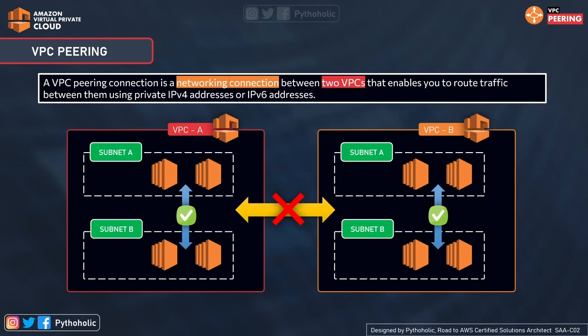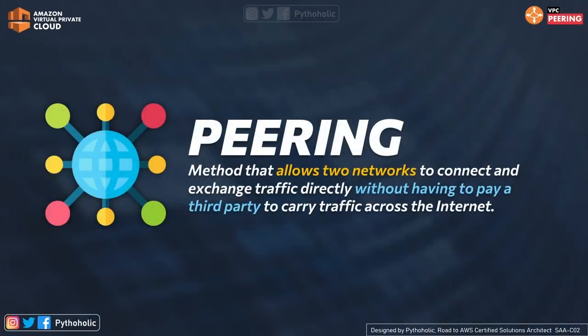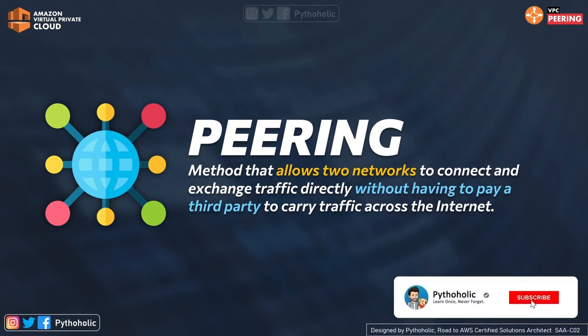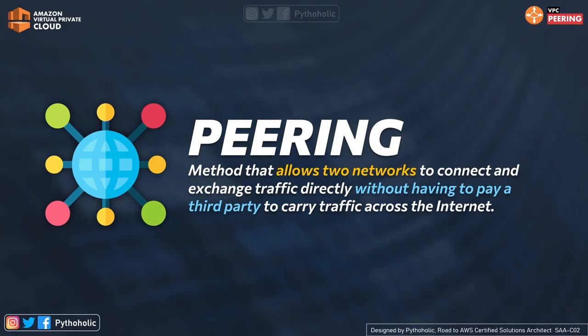But what if we don't want to use those things? We need something simpler. When we say VPC peering, think of the term peering itself — peering is a method that allows two networks to connect and exchange traffic directly without having to pay a third party to carry traffic across the internet. The peering connection is provided by AWS and we can use it to connect to another VPC and get access to the resources we need. But we need to understand what makes up a VPC peering connection.